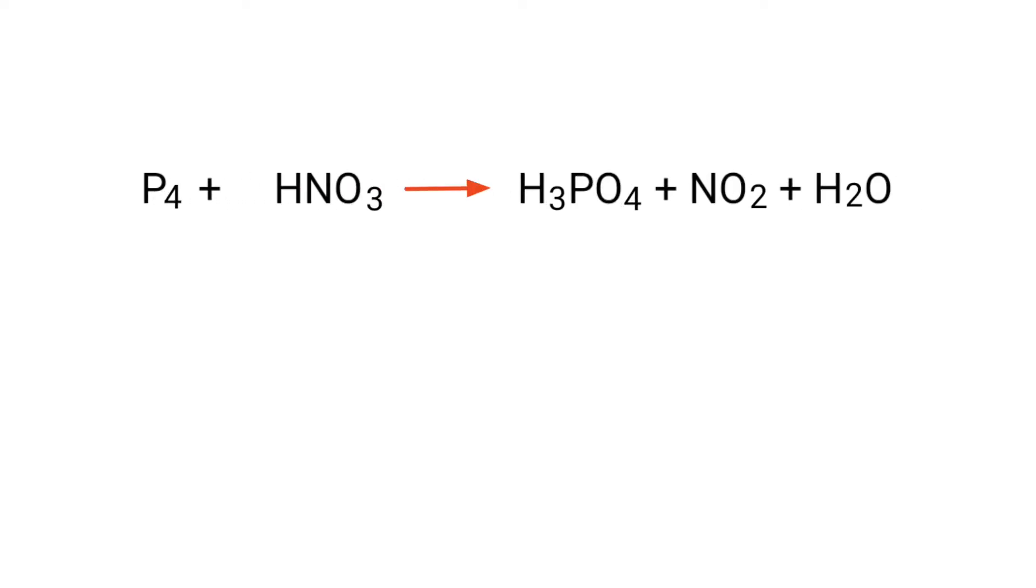Figure the reducing and oxidizing agents by the rules of assigning oxidation numbers. In this equation, phosphorus has charge of 0 and it's changing into plus 5, so phosphorus is being oxidized.